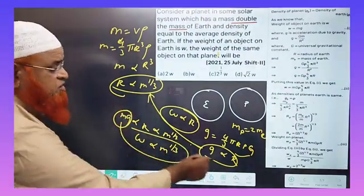You know that weight on the planet by weight on the Earth is nothing but mass of the planet, which is two times mass of the Earth by mass of the Earth, the whole to the power of 1/3. So mass of the Earth gets canceled. So weight of the planet is equal to 2^(1/3) times weight on the Earth.